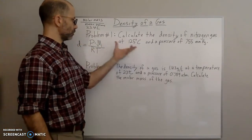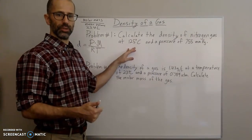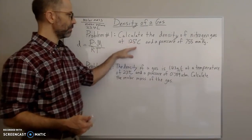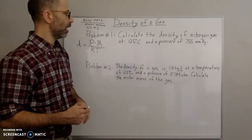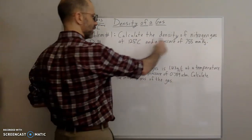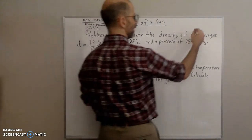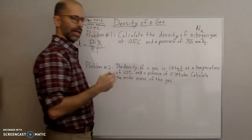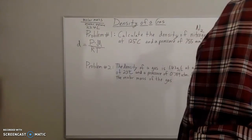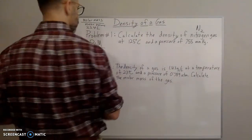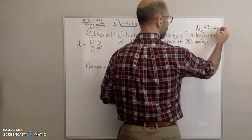The molar volume is 22.4 liters per mole. Looking at the first problem, remember standard temperature and pressure: standard temperature is 0 degrees Celsius, 273 degrees Kelvin, and standard pressure is 760 millimeters of mercury. We're not at either of those, so we would use our full equation. They're saying calculate the density of nitrogen gas. You have to remember that nitrogen gas is N2 — it's a diatomic element. Nitrogen is 14.01, so that means it's going to be 28.02 grams per mole.